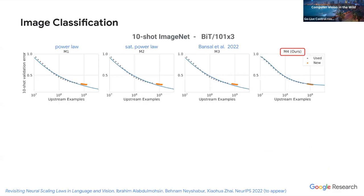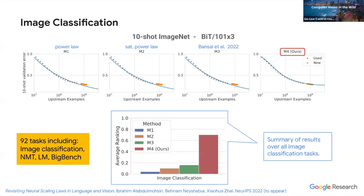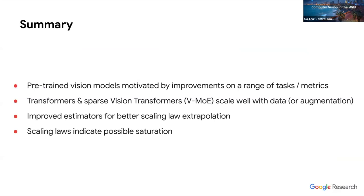The M4 estimator achieves better extrapolation performance, observed across a number of classification tasks, and also works well on neural machine translation, language modeling, and the BIG-Bench language understanding benchmark. To summarize: pre-trained models are motivated by many tasks and metrics beyond image classification; transformers and sparse transformers scale well; we've presented scalable estimators for describing this behavior quantitatively; and our scaling laws indicate possible saturation when training larger models, at least on initial classification benchmarks.